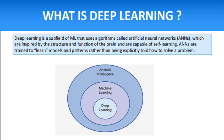Basically, artificial intelligence is the capability of a machine to imitate intelligent human behavior. Then machine learning is a branch of AI that gives computers the ability to learn from data without being explicitly programmed.